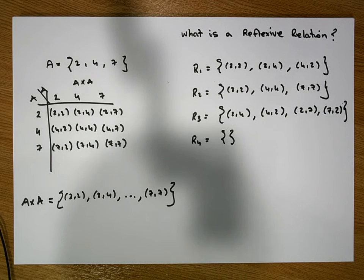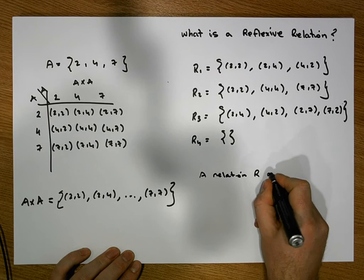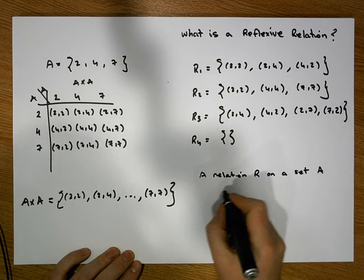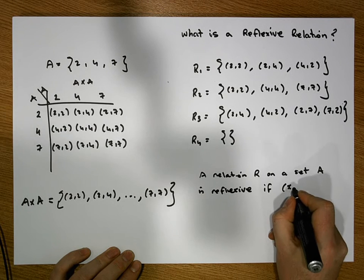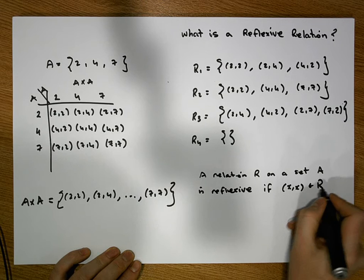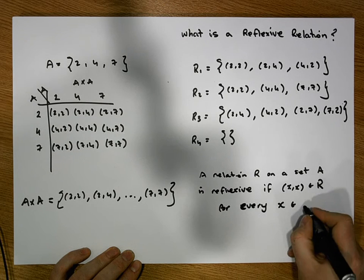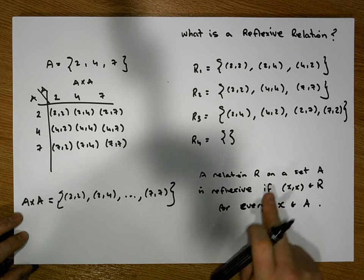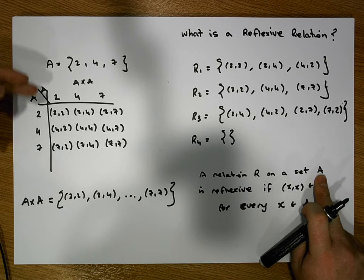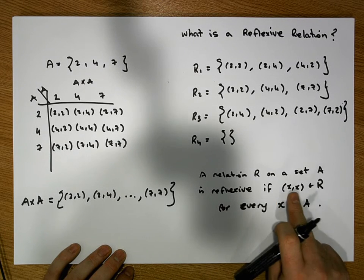A relation R on a set A is reflexive if (x, x) is an element of R for every x in A. Let's recap: we have a set A, we constructed its cross product, we took a subset from there which gave us our relation. We say it's reflexive if (x, x) is an element of R for every x that's in A.